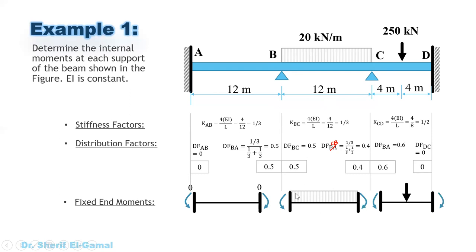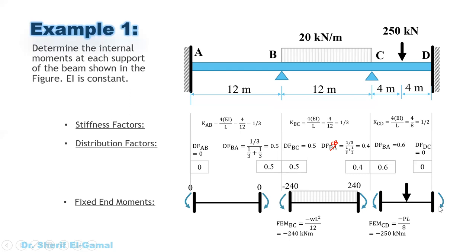For span BC with a uniform load on a fixed-fixed span, the fixed end moment is WL²/12. So FEM_BC = −WL²/12 (counterclockwise, negative) and FEM_CB = +WL²/12 (clockwise, positive), giving ±240 kN·m. For span CD with a concentrated load at mid-span on a fixed-fixed span, the formula is PL/8. With P = 250 kN and L = 8 m, FEM_CD = −250 kN·m and FEM_DC = +250 kN·m.